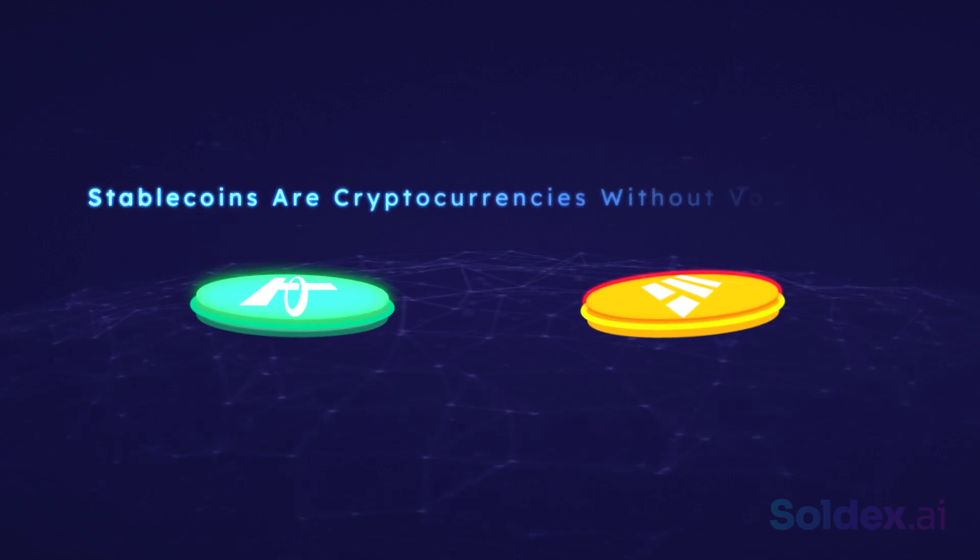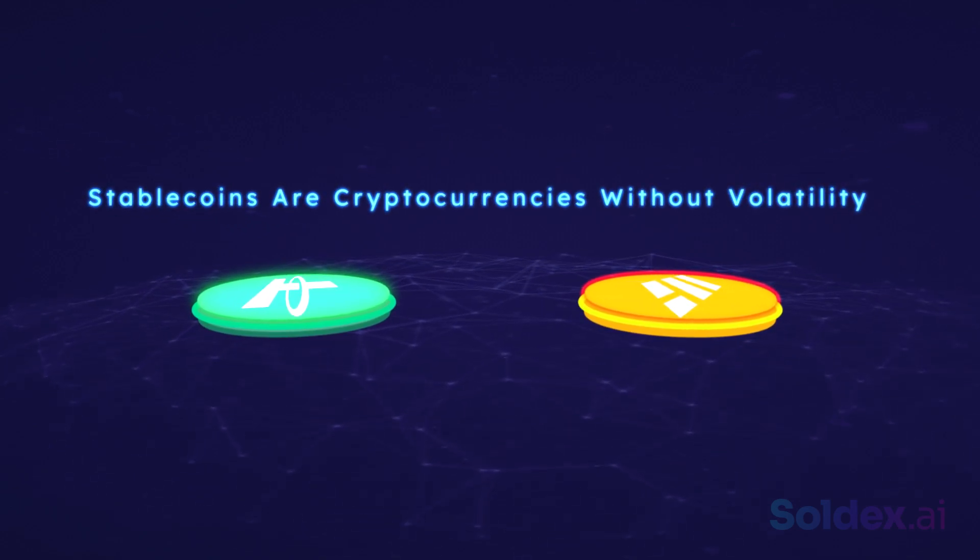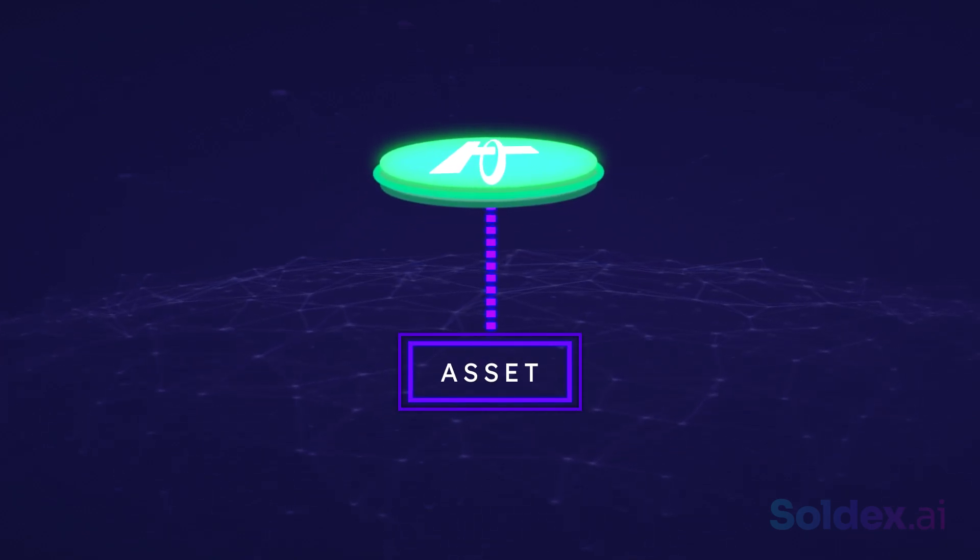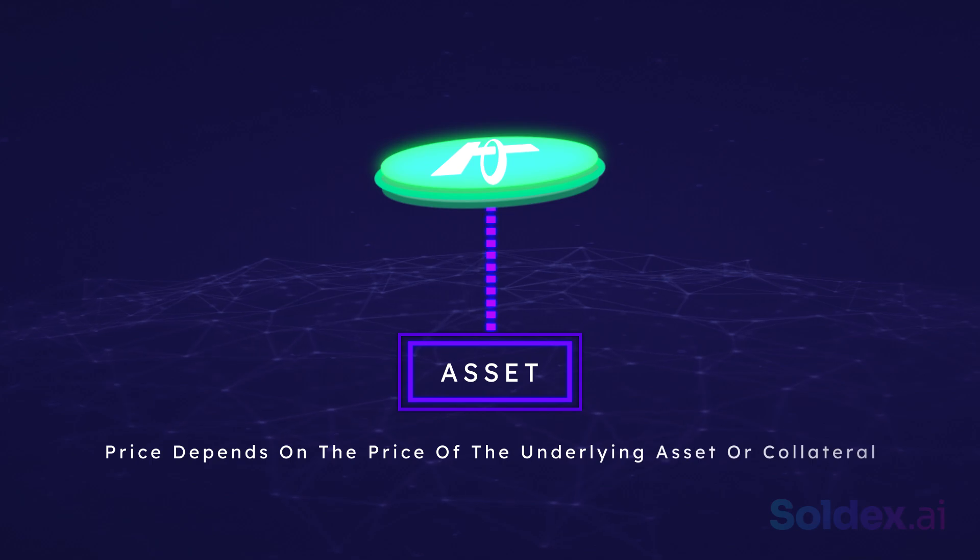Simply put, stablecoins are cryptocurrencies without volatility. A stablecoin is a utility token pegged to an underlying asset whose price depends on the price of the underlying asset or collateral.